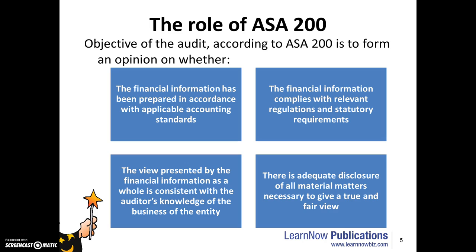Looking in particular at ASA 200, the objective of the auditor is to form an opinion on whether the financial information has been prepared in accordance with applicable accounting standards, the view presented is consistent with the auditor's knowledge of the business, the financial information complies with relevant regulations and statutory requirements, and there is adequate disclosure of all material matters necessary to give a true and fair view.